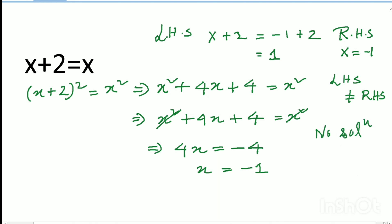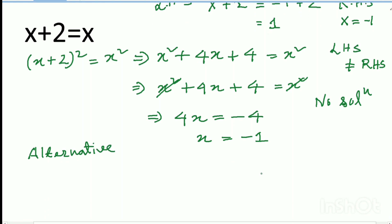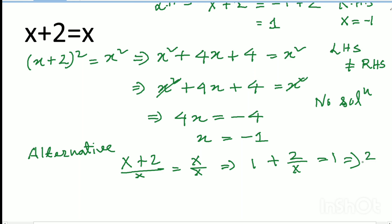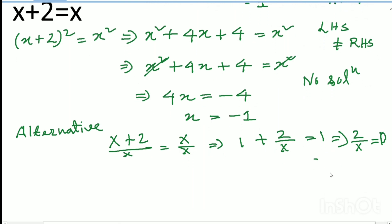Alternative method: take x plus 2 divided by x equals x divided by x, which gives 1 plus 2 over x equals 1. So 2 over x equals 0, which means x is undefined. Therefore there is no solution. I hope that is clear.